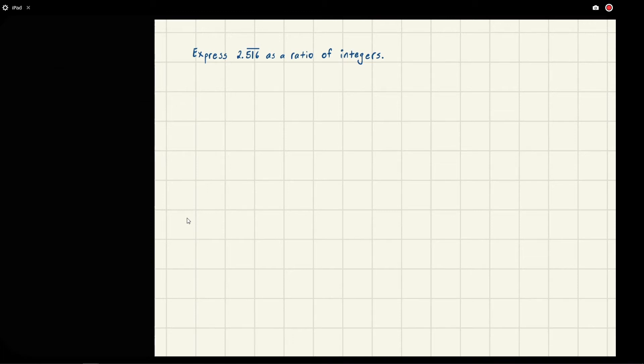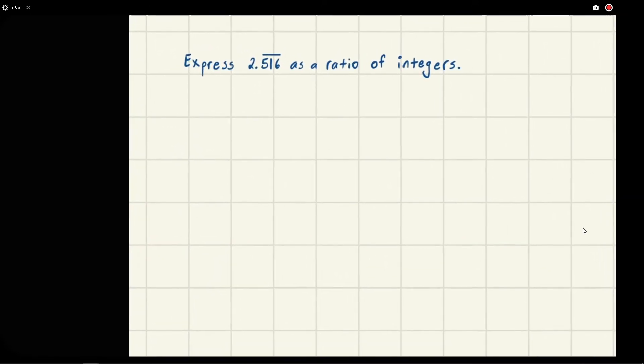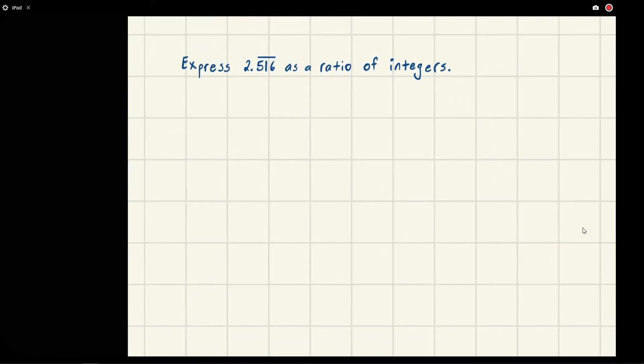Eric Burgess here. We've been tasked with expressing the number 2.516 repeating as a ratio of integers. Repeating decimals can be rewritten as a ratio of integers because they form a geometric series.